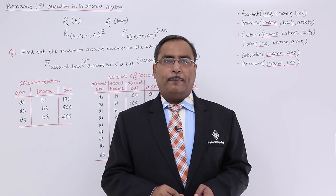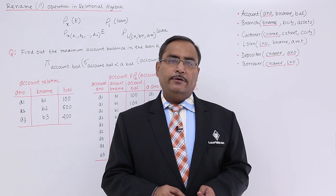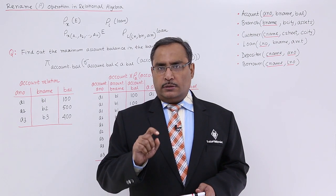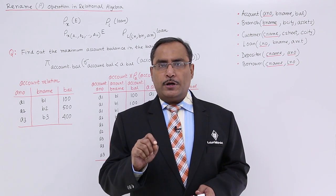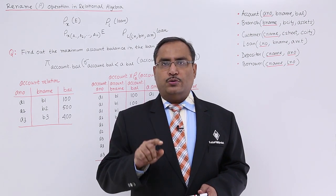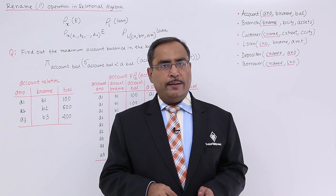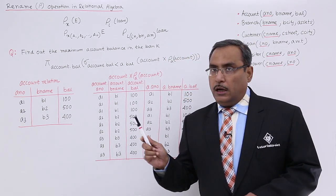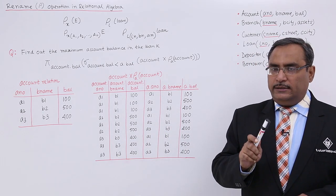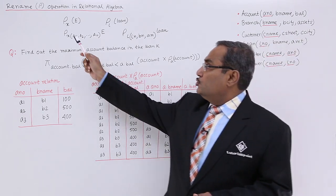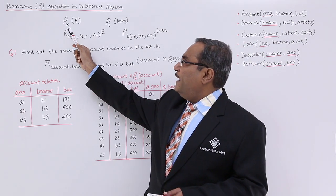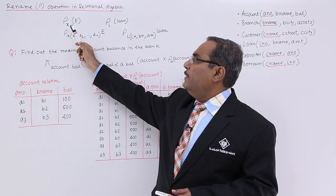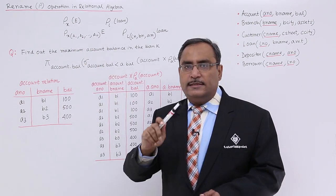We are discussing the rename operation in relational algebra. The rename operation uses the symbol rho. Using rho we shall denote the rename operation. The syntax to write this rename operator is: rho x e, where e is the relation name and x is the new name.